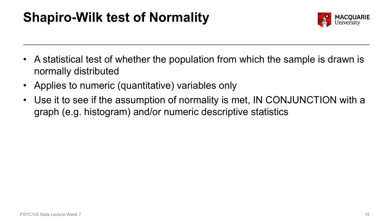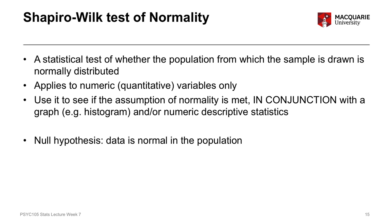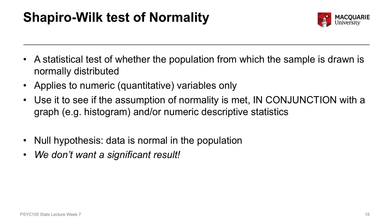The Shapiro-Wilk test is very useful, but only when used alongside the histogram and numeric descriptive statistics — not in isolation. Like any statistical test, it has a null hypothesis: that the data are normally distributed in the population. Because that is our null hypothesis, we actually do not want a significant result. We want a p-value greater than 0.05 for this assumption to be met.